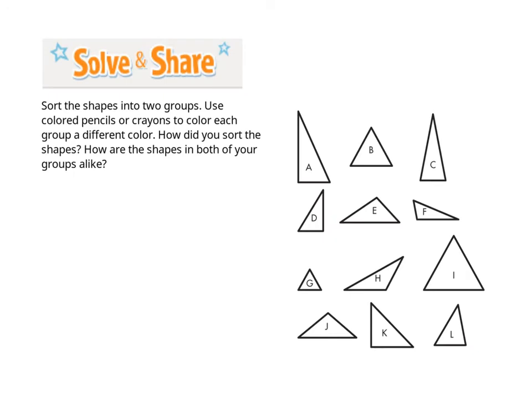Sort the shapes into two groups. Use colored pencils or crayons to color each group a different color. How did you sort the shapes? How are the shapes in both of your groups alike?